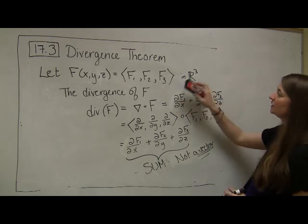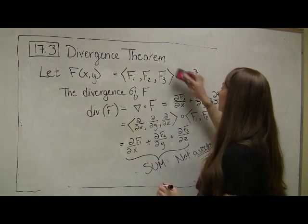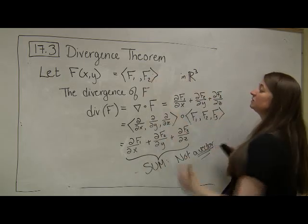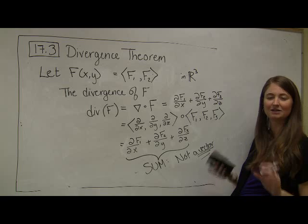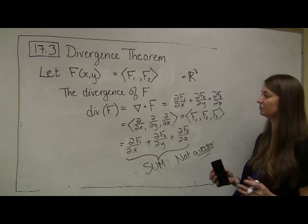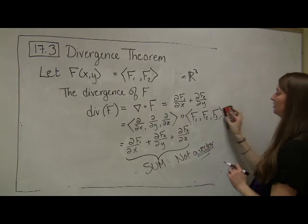Just as a side note, let's say that our function only had two components. Let's say it was in R2, our vector field. Divergence also applies. So, unlike curl and scalar curl, where we had two different definitions depending upon whether our vector field was in R2 or R3, for divergence, it's the same thing. We would just get rid of this third component.